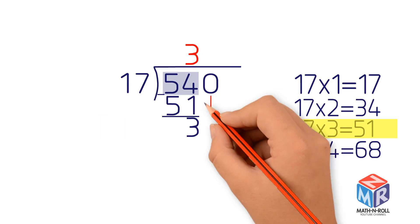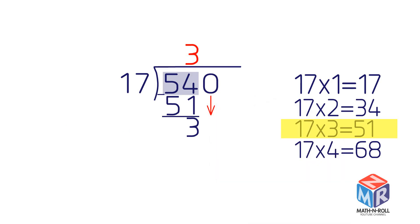Then bring down the next number, 0, to make the new number 30. Now ask how many times 17 goes into 30 — that is, what's 30 divided by 17? The answer is 1, with a remainder.